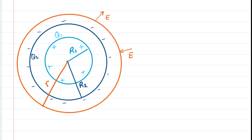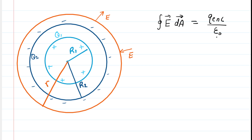In order to calculate the magnitude of the electric field, we have to apply Gauss's law. Gauss's law tells us that the integral representing the total electric flux penetrating our Gaussian surface equals the total charge enclosed by our Gaussian surface divided by a physical constant. No matter where we are on our Gaussian surface, our electric field is going to have a constant value.